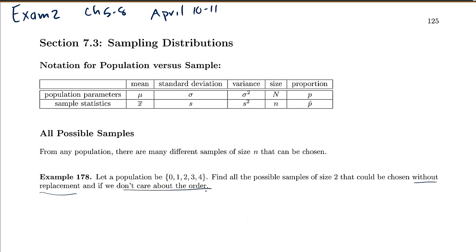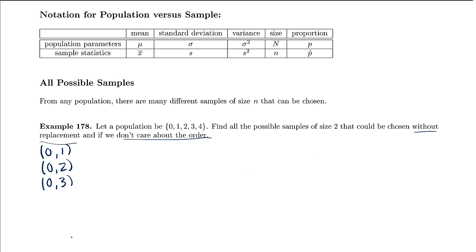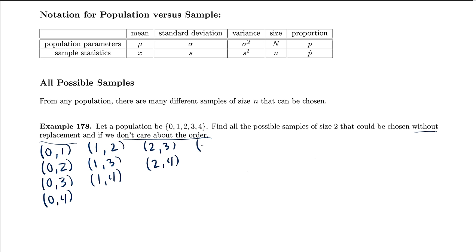Let's find all the possible samples of size 2 that could be chosen — notice it's without replacement and we don't care about the order. You never want to sample the same person twice, and we don't usually care who was surveyed first. So the samples are: {0,1}, {0,2}, {0,3}, {0,4}, {1,2}, {1,3}, {1,4}, {2,3}, {2,4}, and {3,4} — those are all 10 possible samples.